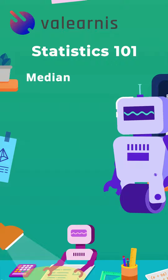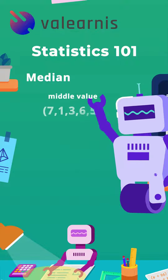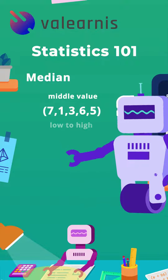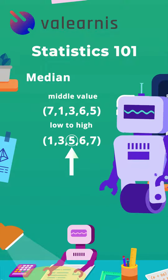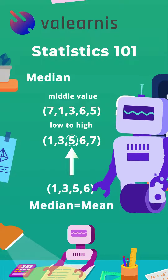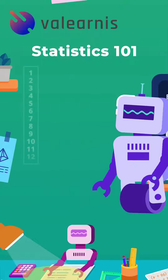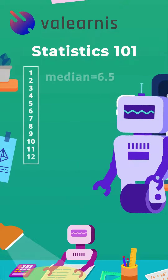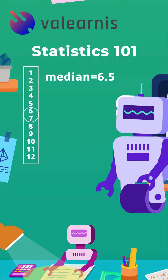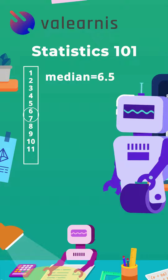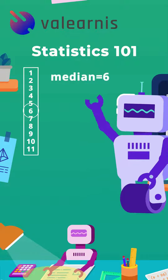The median of a data set is the middle value when they're put in order from low to high. If there is an even number of values, then the median is the mean of the middle two values. In our example, the median is 6.5 since 6 and 7 are the two middle values. If we got rid of the 12, for example, the median would change to 6.